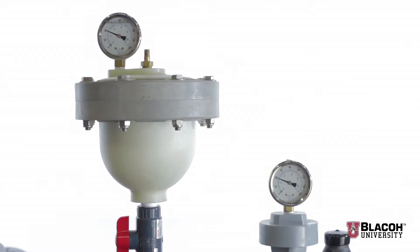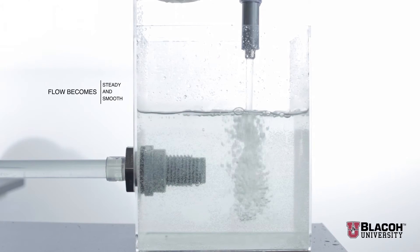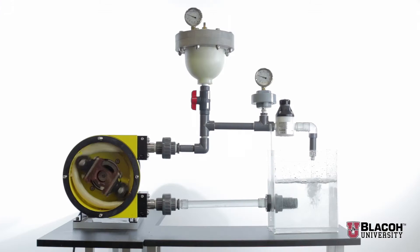As we activate the dampener by opening an isolation valve, you will notice that instantly the flow becomes steady and smooth, centrifugal-like, and that the needle on the pressure gauge is nearly stabilized, indicating that there are no more pressure swings, thus protecting piping and other system components.